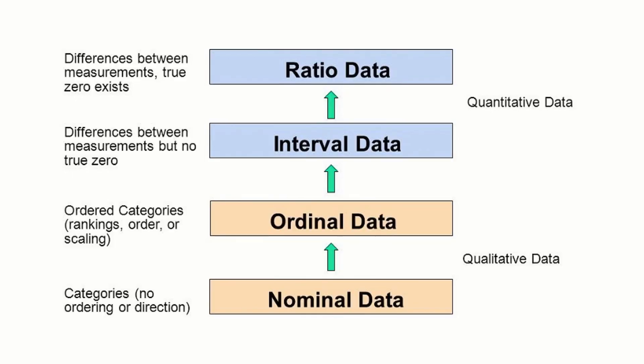There are occasions when you have some control over the measurement scale. For example, with temperature, you can choose degrees Celsius or Fahrenheit and have an interval scale, or choose degrees Kelvin and have a ratio scale. Generally speaking, you want to strive to have a scale towards the ratio end as opposed to the nominal end.